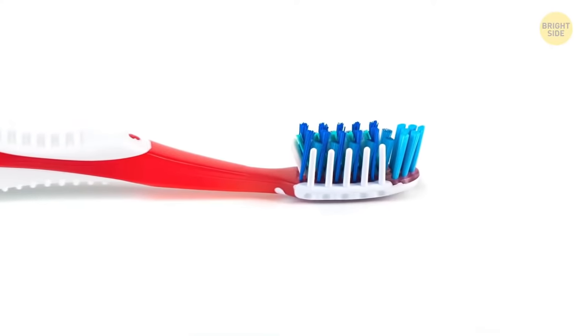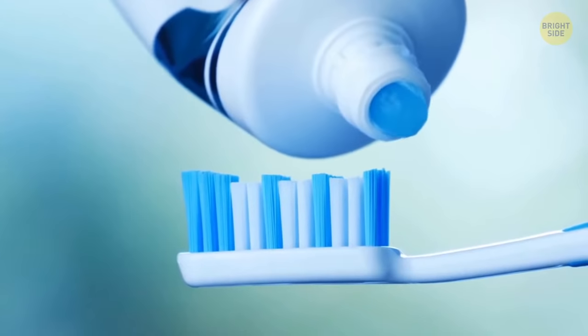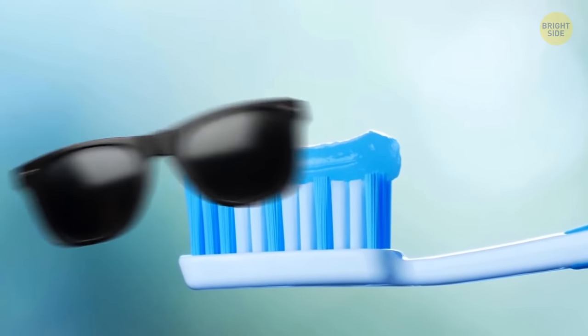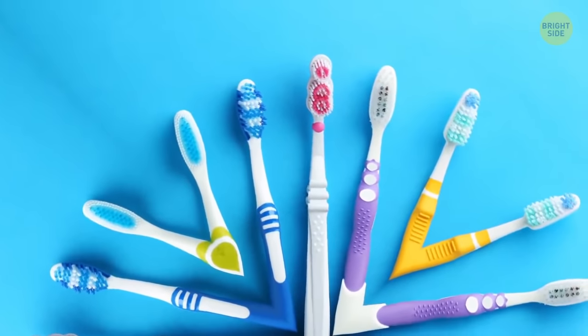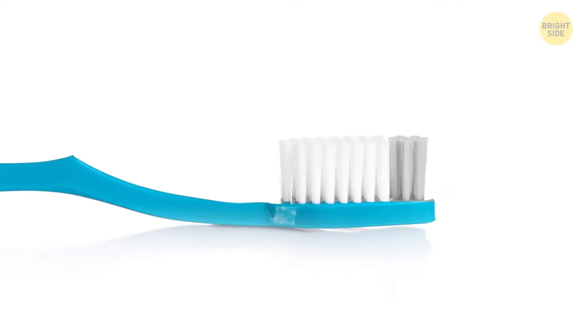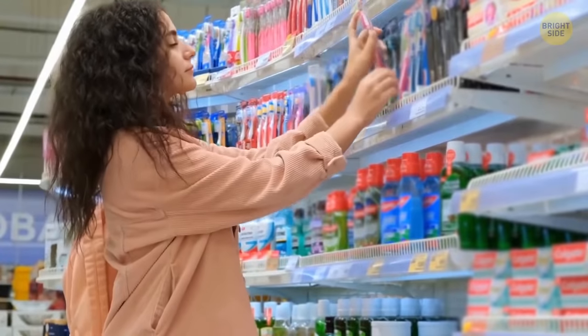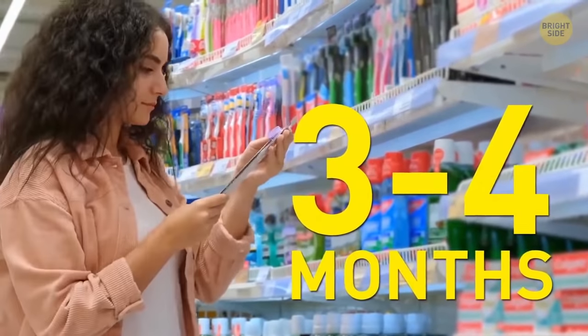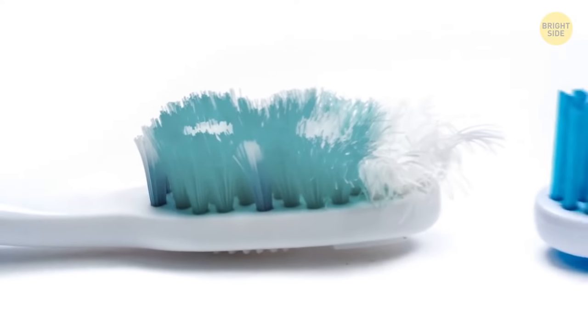Does your toothbrush have a pattern of blue bristles weaved in with the white ones? It makes the toothbrush look a lot more stylish, but it's not just about looking good. Those bristles actually have a practical purpose. The blue dye is designed to wear off around the same time as when you should replace your toothbrush. You should be switching out your toothbrush every three to four months anyway. But those blue bristles are there to give you a gentle nudge just in case you forget.